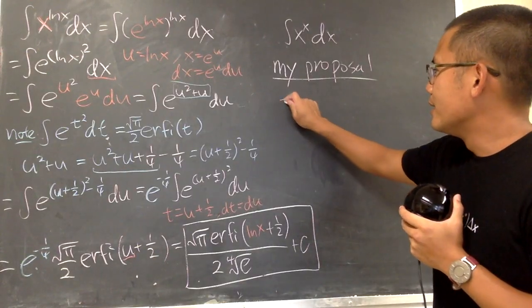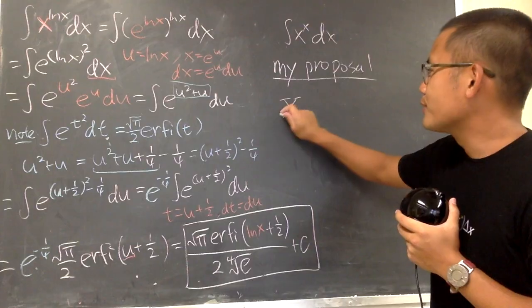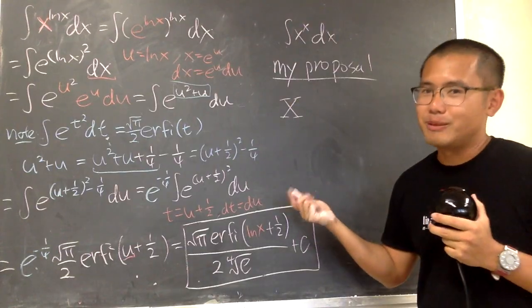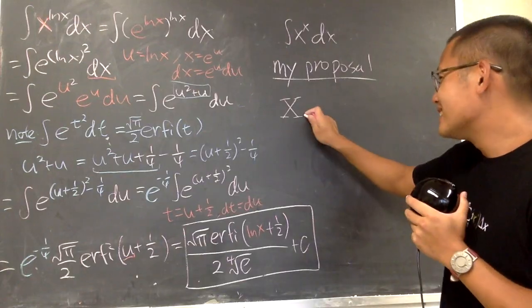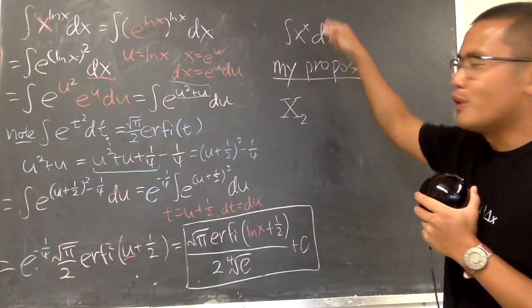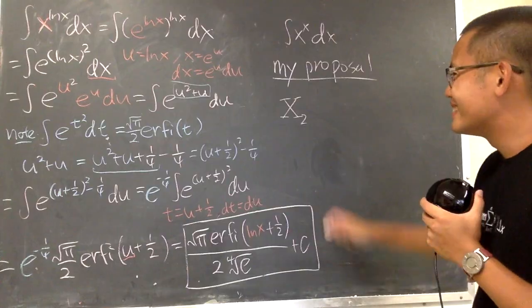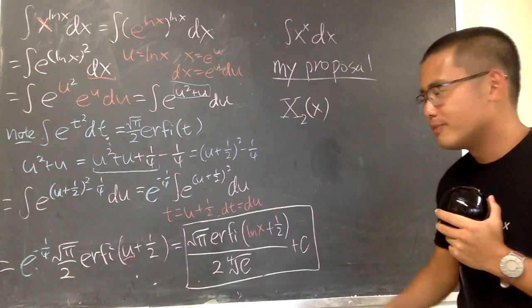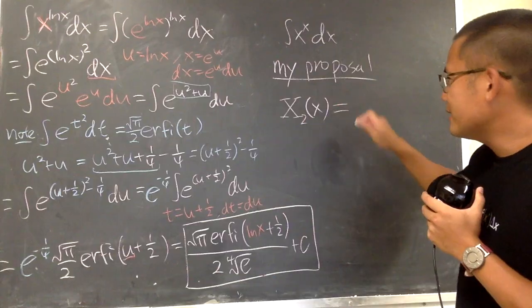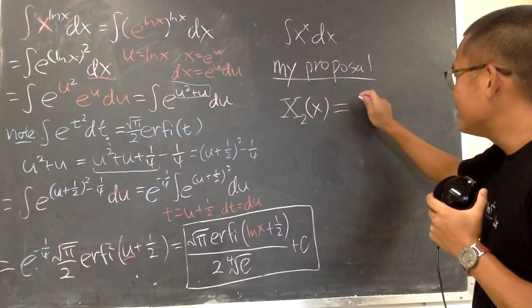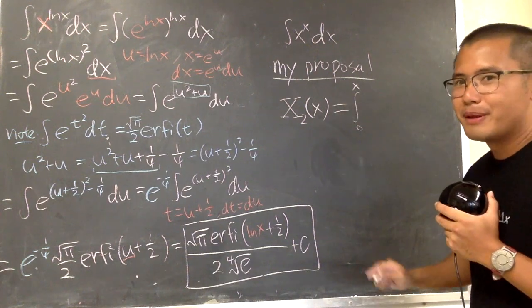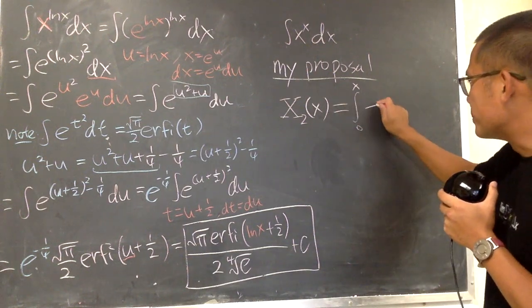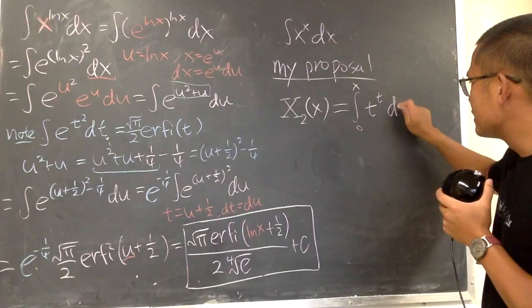My proposal is that, let's call it X. I don't know a better name. If you guys would like to have a better name, just let me know. Use a capital X and then the little 2, meaning that we have two of these little x then, to other powers. And the input is x. Let's define this to be the integral going from 0 to x of t to the t's power dt.